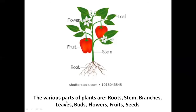So repeat after me. The various parts of plants are roots, stem, branches, leaves, buds, flowers, fruits, seeds.